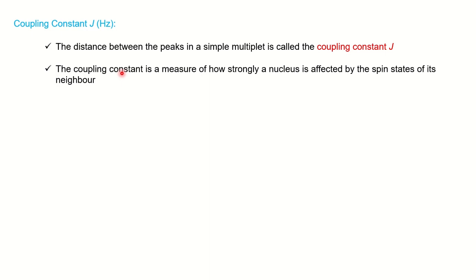First we will discuss these two points by taking the example of ethyl iodide. Here you can see how many signals you will find in proton NMR. The three protons of CH3 are in the same chemical environment, so it will show one signal. The CH2 two protons are in the same environment — they face iodide on one side and methyl on the other — so they are considered equivalent protons and show a single signal. So there are two signals in the ethyl iodide NMR spectrum.